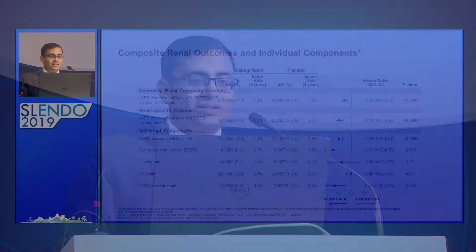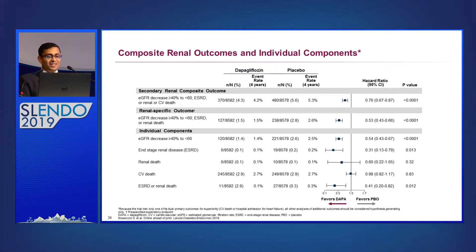Are these drugs beneficial in both classes of patients? DECLARE showed around a 24 percent reduction in renal endpoints whether used in patients with albuminuria or in those without albuminuria but with reduced eGFR — again suggesting a class effect. The composite renal outcome showed decreases in renal death, end-stage renal disease, and a substantial decrease in progression to ESRD when dapagliflozin was added.